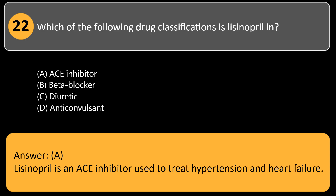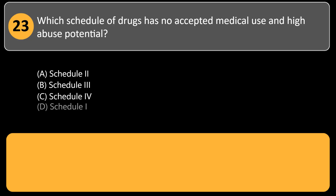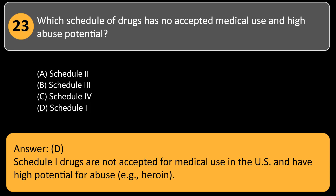Which schedule of drugs has no accepted medical use and high abuse potential? A) schedule 2, B) schedule 3, C) schedule 4, D) schedule 1. Answer: D. Schedule 1 drugs are not accepted for medical use in the U.S. and have high potential for abuse, e.g., heroin.